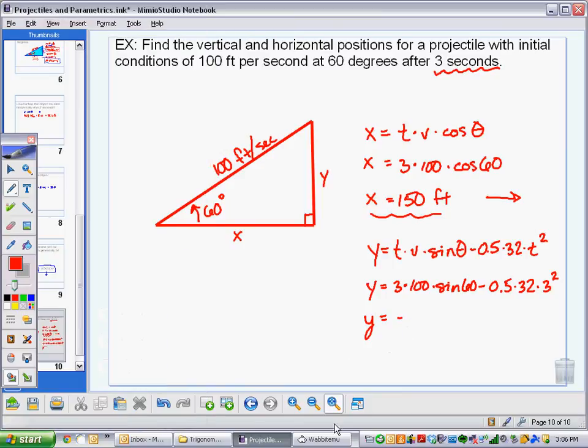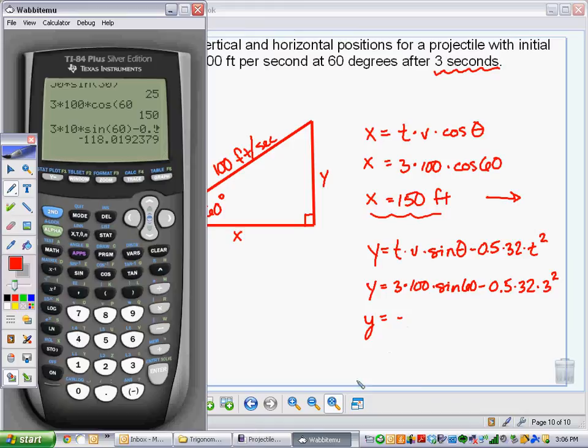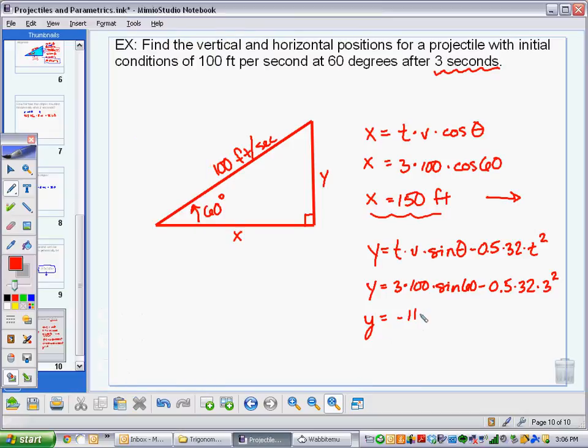Times 3 squared. Uh oh. Negative 118 about. Negative 118. So this is actually,